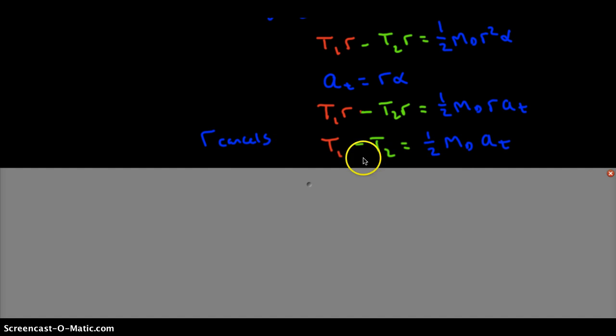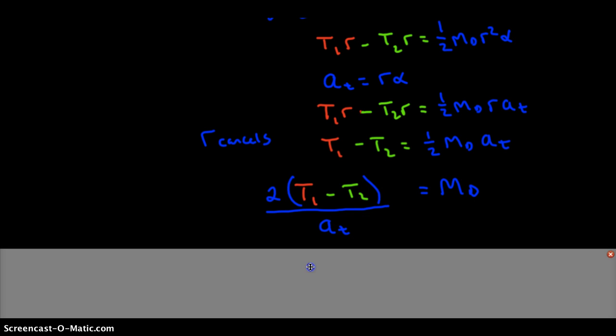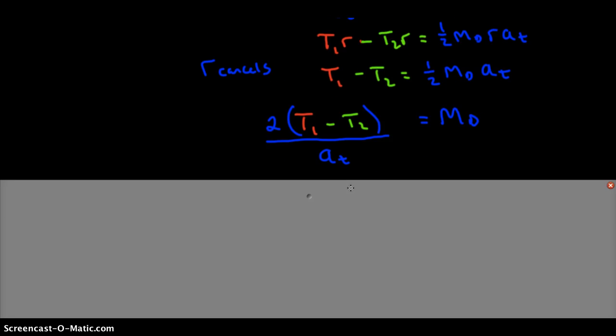So now we can solve for the mass of the disc, which is what we're looking for, and we end up with this expression right here, which looks pretty simple. So now all we need to do is use our second law equations to solve for expressions T1 and T2, and we should be good to go. So let's go back up and do that.